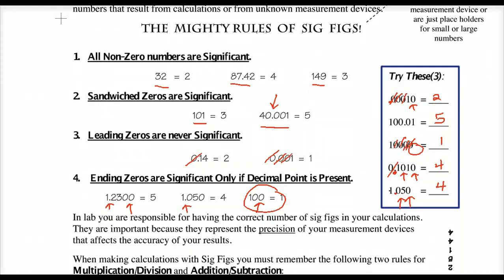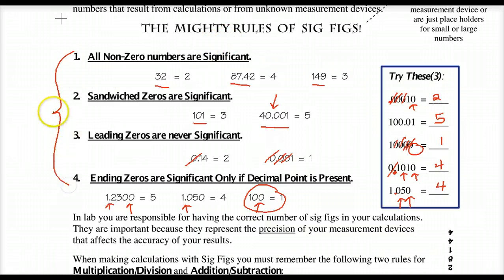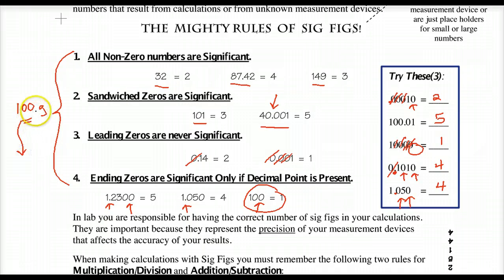What we are doing is looking at a number from a measurement and deciding: does the zero count in the measurement or doesn't it? In a nutshell, that's what we're doing. We're taking a number, we don't know about the device, and we're saying, do these zeros count or do they not? If you write 100 grams without a decimal point, I know those zeros were just placeholders, and this only has one significant figure.